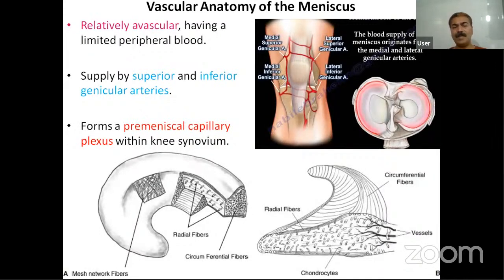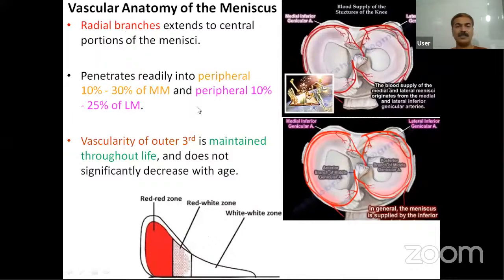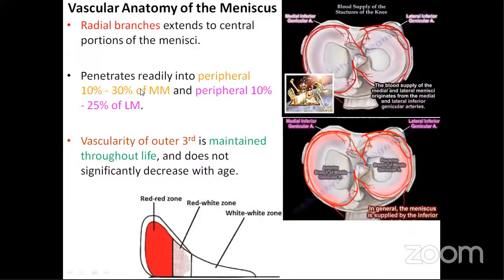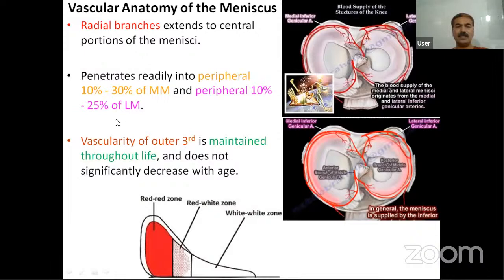The vascular anatomy of the meniscus: it is relatively avascular, with a peripheral limited blood supply from the superior and inferior genicular arteries, forming a perimeniscal capillary plexus. Radial branches extend inside the menisci. On the medial meniscus side, around 10 to 30% of the periphery is penetrated by these radial branches, whereas on the lateral meniscus it is around 10 to 25%. The vascularity of the outer third is maintained almost throughout life with very little change with age.